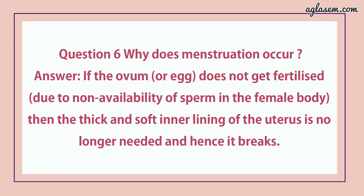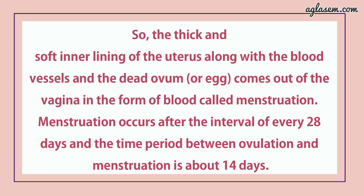Question number 6 says: why does menstruation occur? Answer: if the ovum does not get fertilized, then the thick and soft inner lining of the uterus is no longer needed and hence it breaks. The thick and soft inner lining of the uterus, along with blood vessels and the dead ovum, comes out of the vagina in the form of blood — this is called menstruation. Menstruation occurs after an interval of every 28 days, and the time period between ovulation and menstruation is about 14 days.